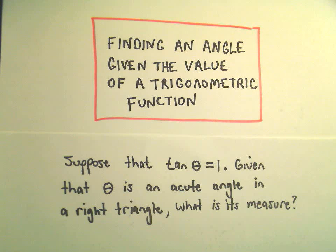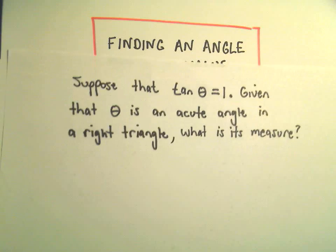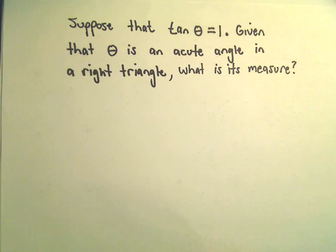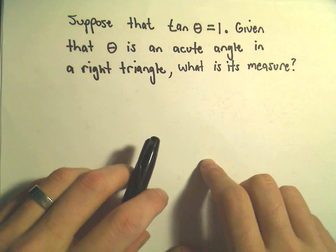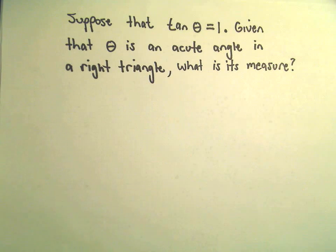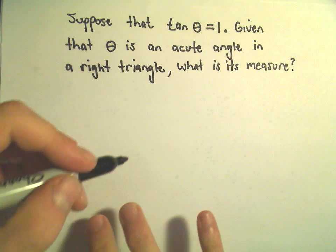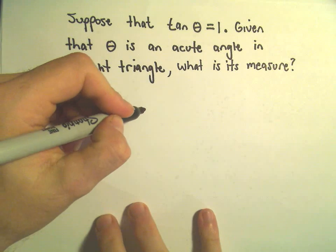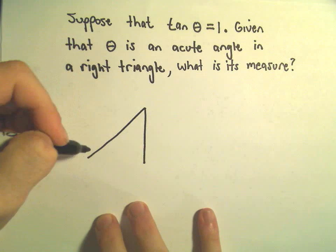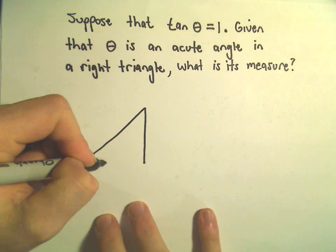Alright, so here's another example. We're going to find an angle given the value of a trig function. In this case, suppose we know the tangent of theta equals 1, and if theta is again an acute angle in a right triangle, we want to figure out what that angle theta is equal to.